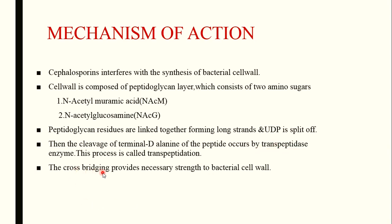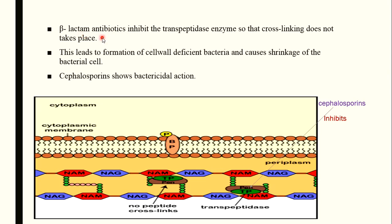The transpeptidation process completes cross-bridging using the transpeptidase enzyme. This cross-bridging of peptidoglycan residues gives the necessary strength to the bacterial cell wall. Beta-lactam antibiotics — meaning penicillins and cephalosporins — inhibit this transpeptidase enzyme. When transpeptidase is inhibited, transpeptidation cannot take place, so cross-linking does not occur, leading to the formation of cell-wall-deficient bacteria.